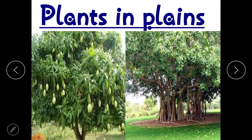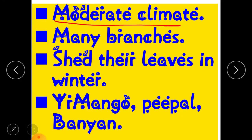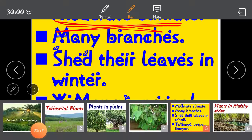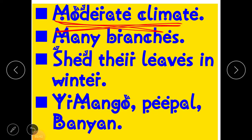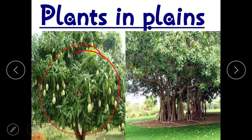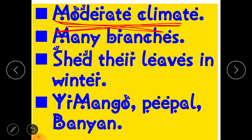Let's start with plants in plains — the areas where you live. In the plains, climate is neither too hot nor too cold; it is moderate. There is moderate rainfall — not too heavy and not very little. Plants that grow in this climate have many branches. For example, you can see mango trees and banyan trees, which is also the national tree of India. These trees shed their leaves in winters.